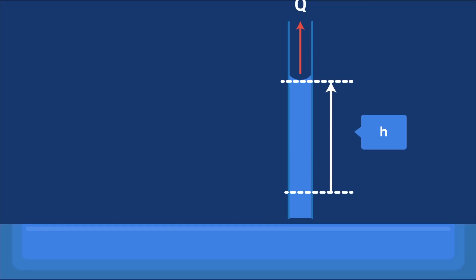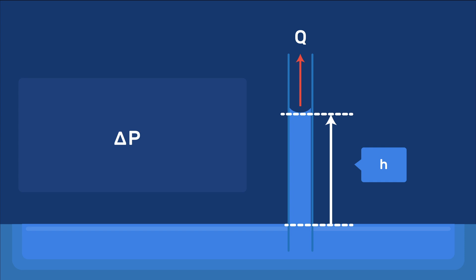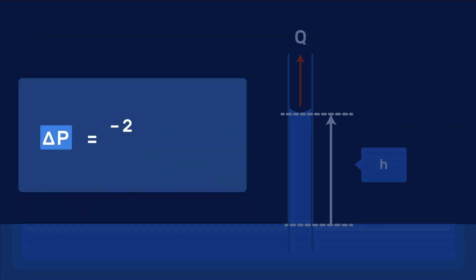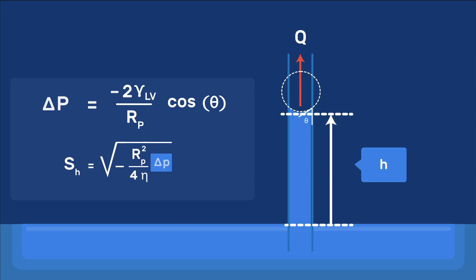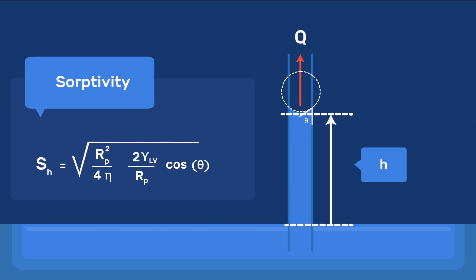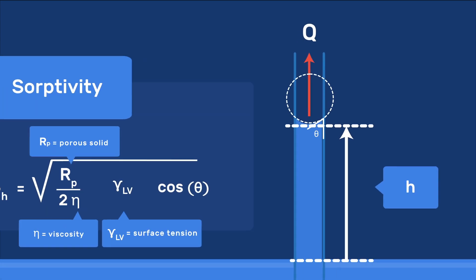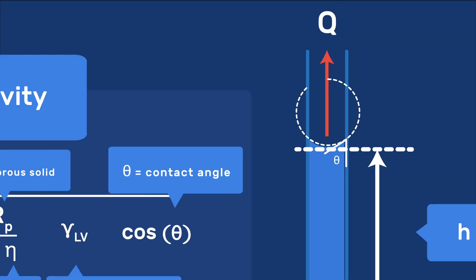We can now replace the capillary pressure, delta p, in the expression for sorptivity by using Laplace's equation: delta p equals minus 2 gamma LV over rp times cosine of theta. This gives an expression for the sorptivity in terms of the porous solid, rp, the liquid, the viscosity and the contact angle, as well as the interaction between the solid and the liquid through their contact angle, theta.